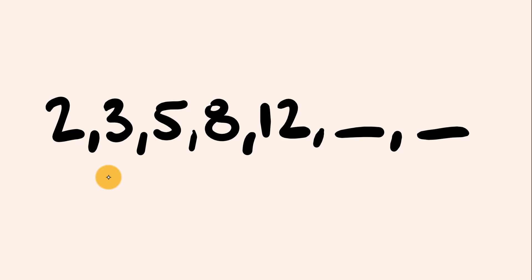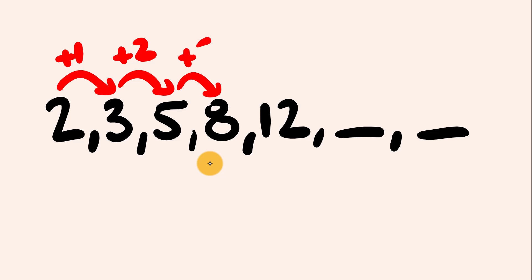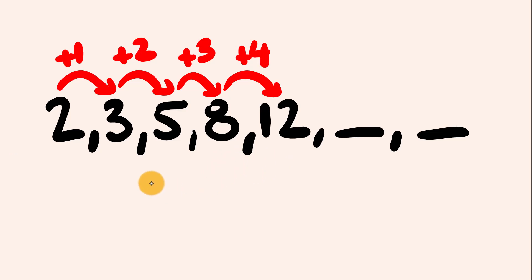Let's look at the differences between our numbers. As we go from 2 to 3, we've gone up by 1. From 3 to 5, up by 2. From 5 to 8, up by 3. And from 8 to 12, up by 4. You can see a pattern — we have an increasing amount going up each time, increasing by 1 extra every time.